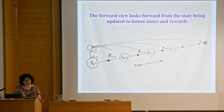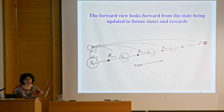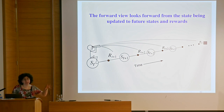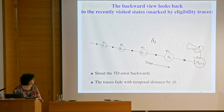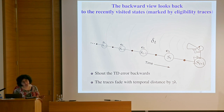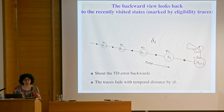This is kind of nice because it's much more like Monte Carlo. If you have one trajectory, the outcome of that trajectory gets spread around everywhere, making the most of the data. At the same time, it still has this feel that the states closest to where the error happened are going to get most of the blame for that error.